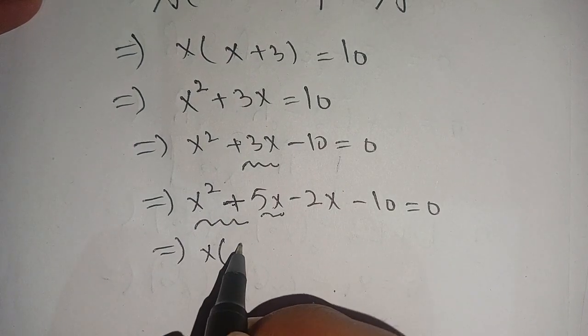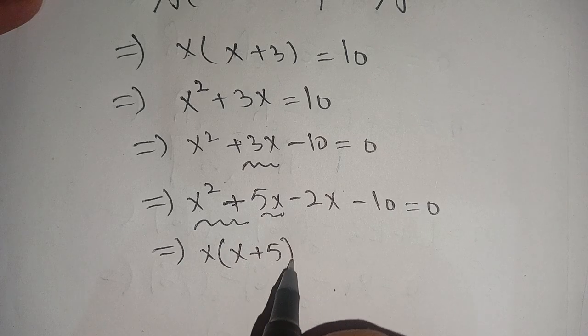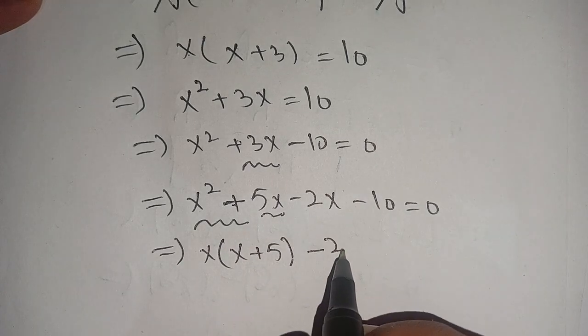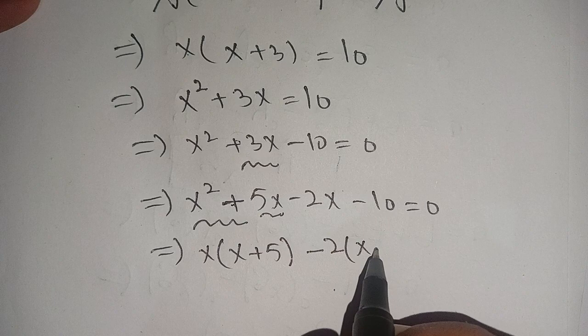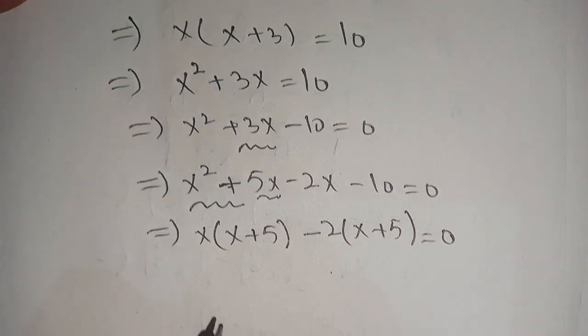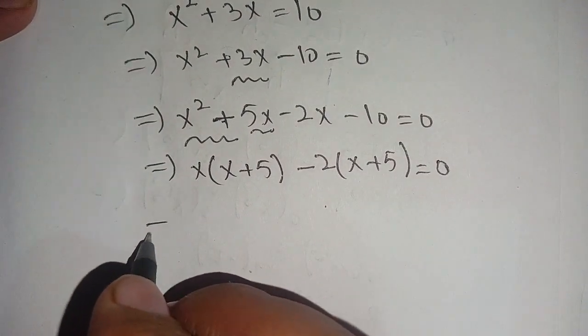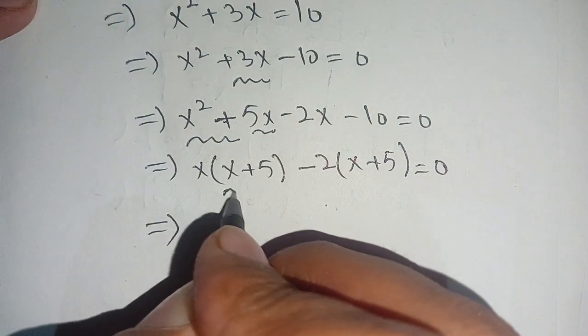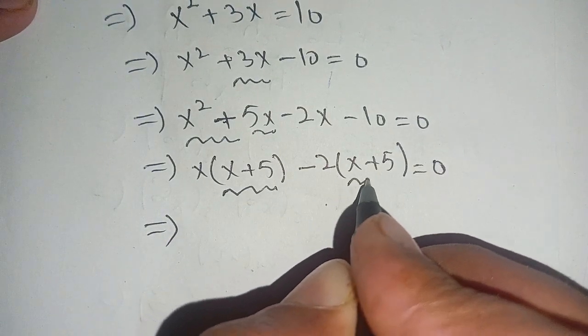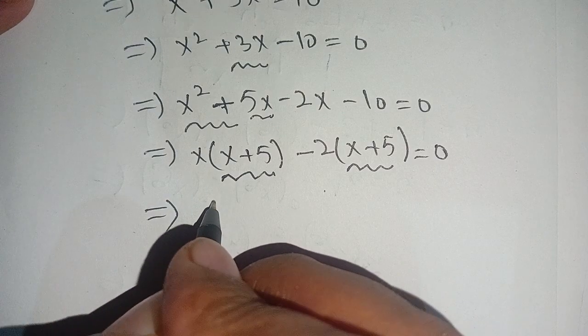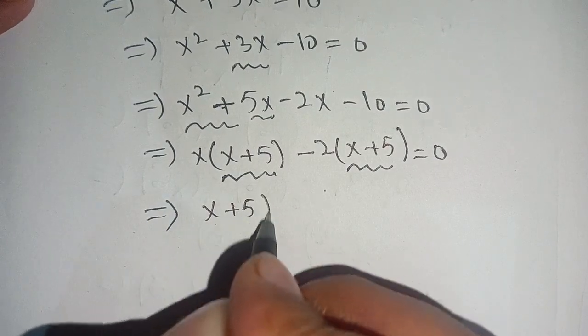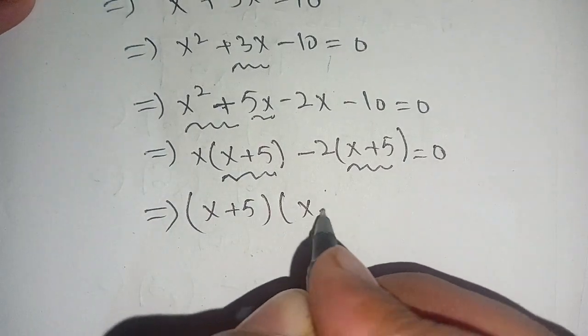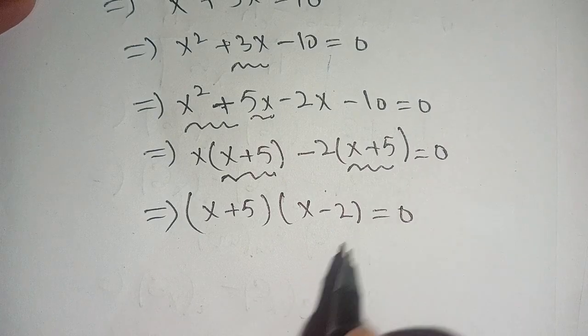We can take out x plus 5 from this term and from this term and we get x plus 5 times x minus 2 is equal to 0.